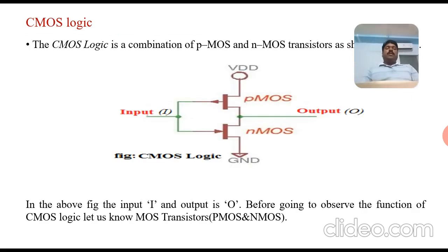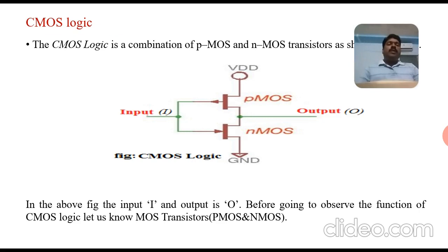Coming to CMOS logic — Complementary Metal Oxide Semiconductor logic. Looking at the circuit diagram, the major components for implementing CMOS logic are P-MOS and N-MOS. The input is I and the output is O. P-MOS is a P-channel device and N-MOS is an N-channel device.